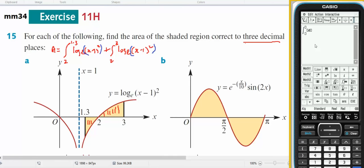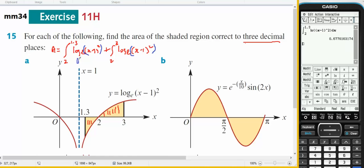If I bring up my keyboard, math 2 integral from 2 to 1.3 of log base e, a separate bracket, x minus 1, close bracket, squared, close bracket, dx. And that's going to equal 0.67761.